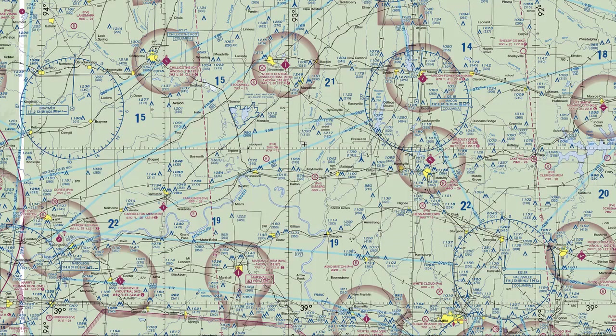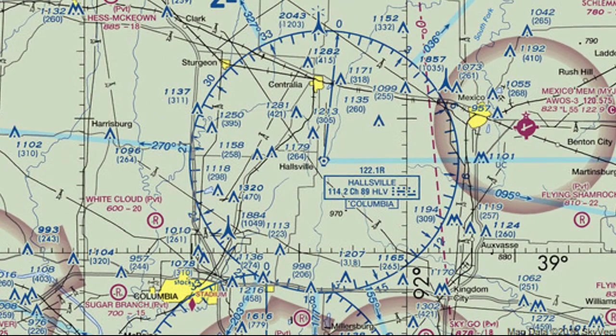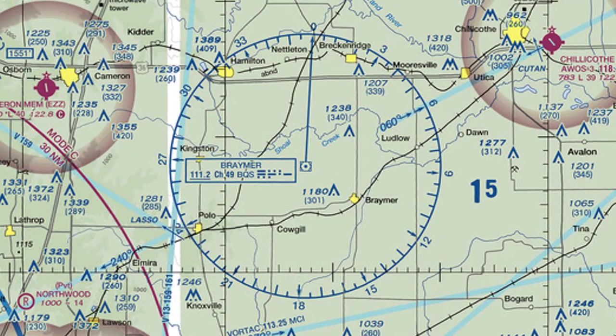Let's say I'm flying and I've gotten a little lost. I can go to my chart and find two VOR stations close to where I think I'm at. I see on the chart I have the Hallsville VOR station with a frequency of 114.2, and I have the Bramer VOR station with a frequency of 111.2.